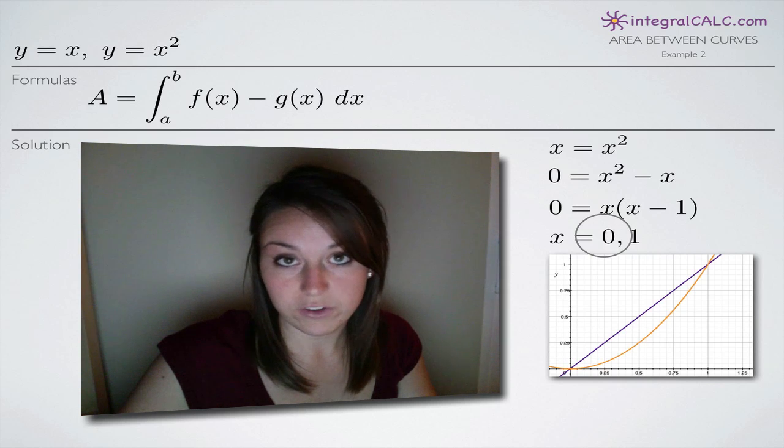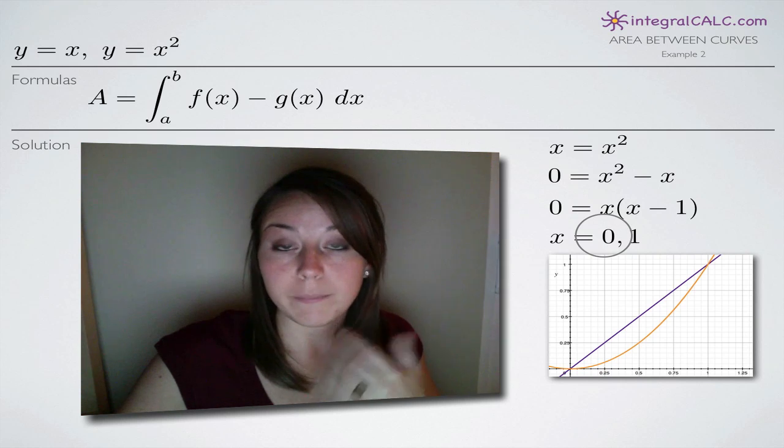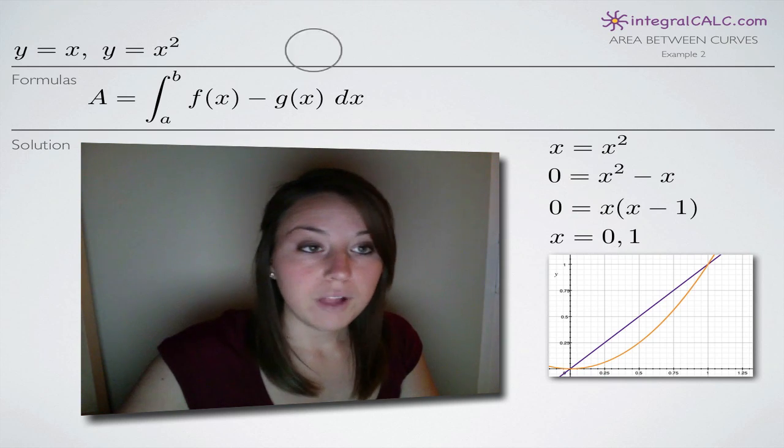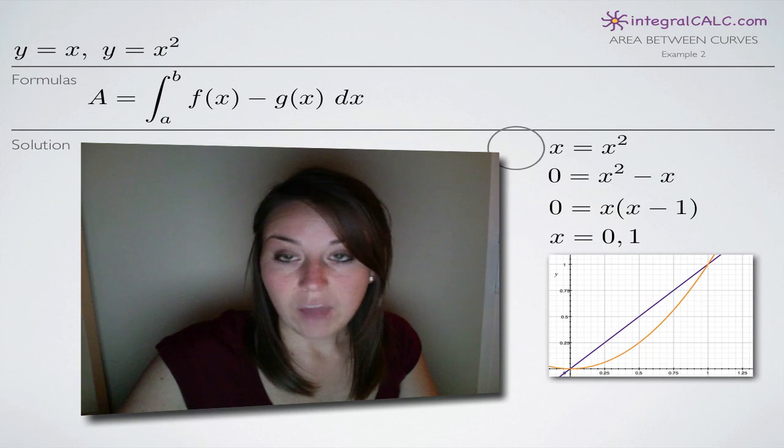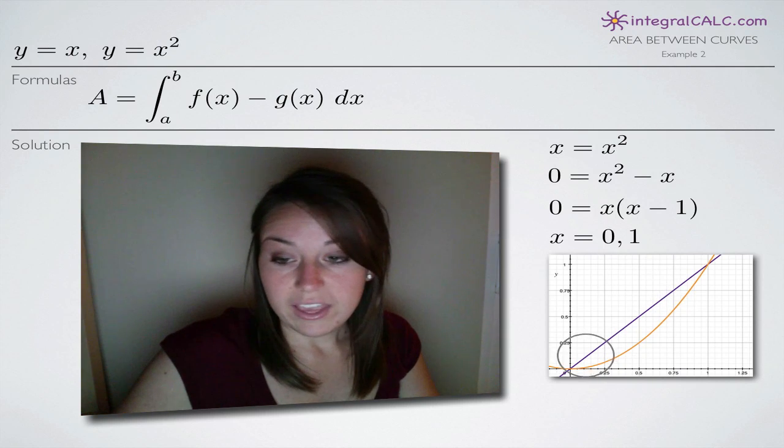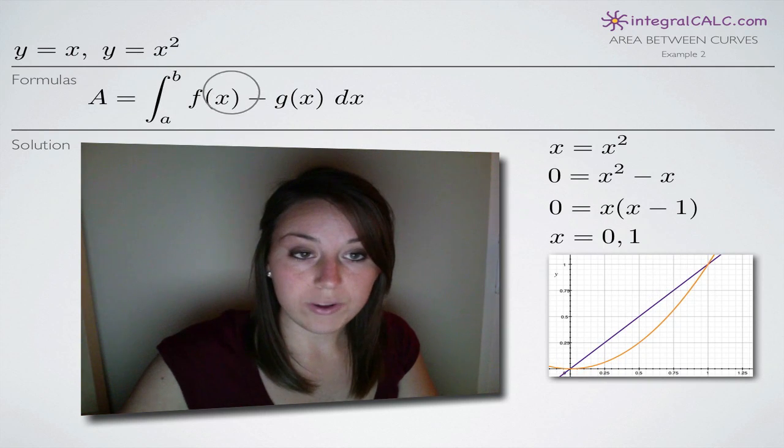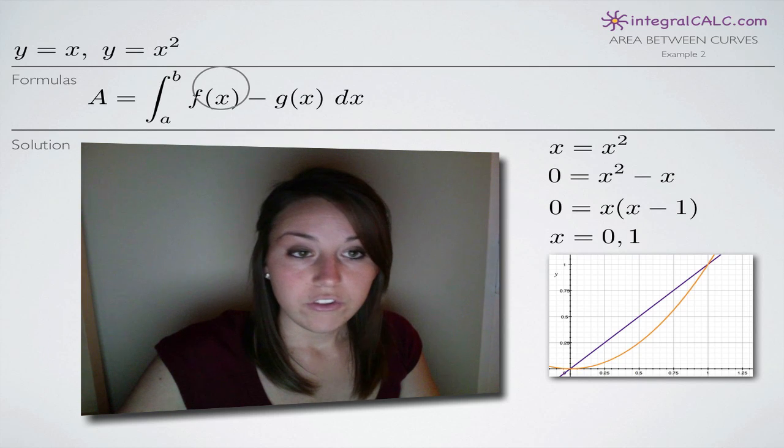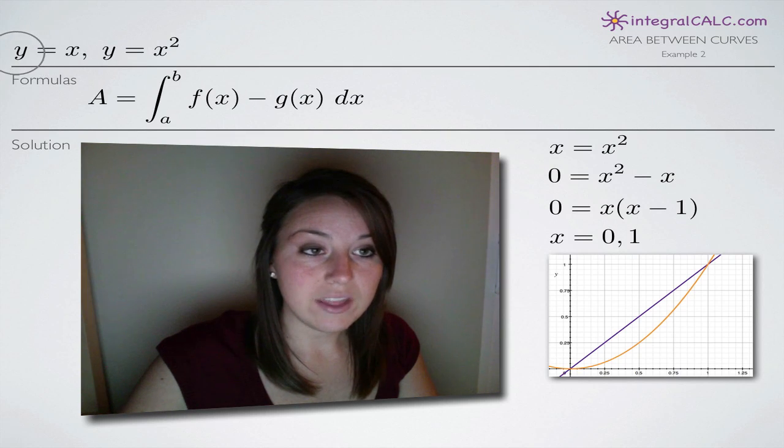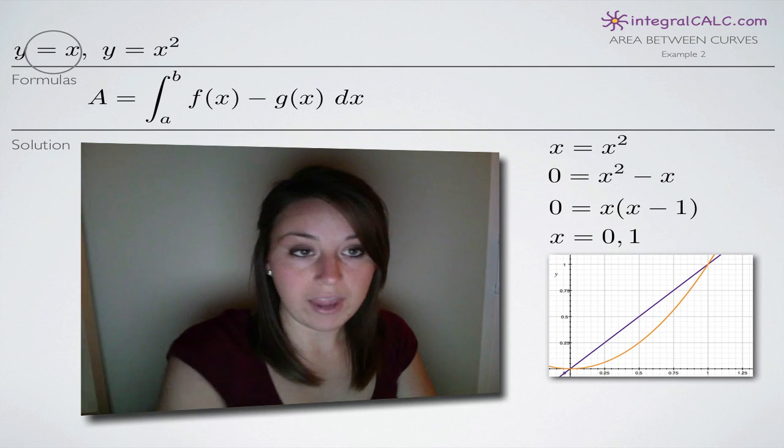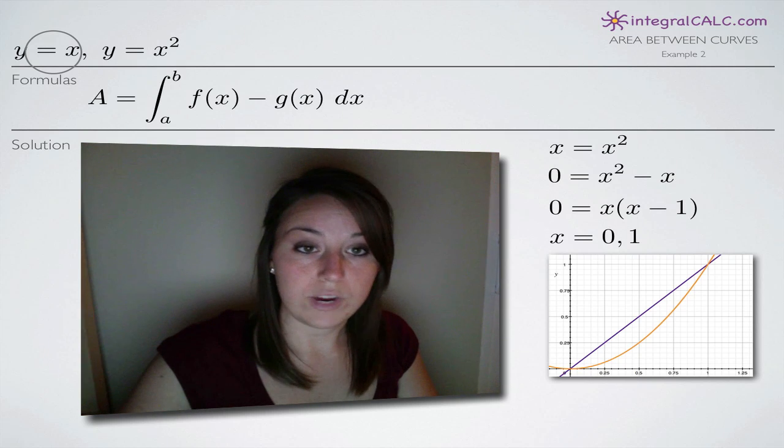Since our points of intersection are zero and one, for example, you could pick one half. Plug one half into both functions and whichever one is higher is your higher equation and it's going to be f of x. So in our case, clearly, we've seen that y equals x is greater than y equals x squared on the range zero to one.